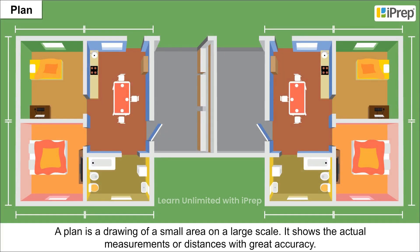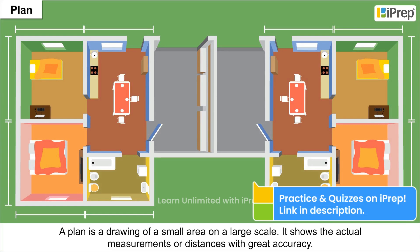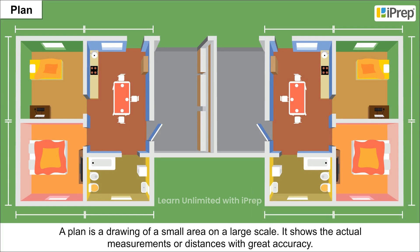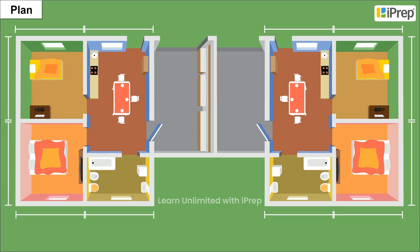Plan. A plan is a drawing of a small area on a large scale. It shows the actual measurements or distances with great accuracy. For example, the plan of Wimmel's house is shown here. It provides the dimension of each room, position of doors and windows, height of walls and corridors. Here, the scale used is 1 cm is equal to 2 m.